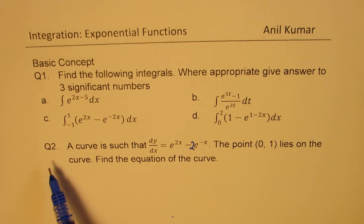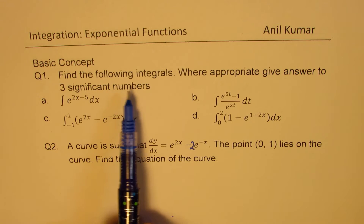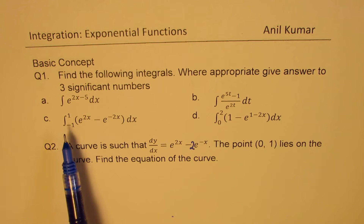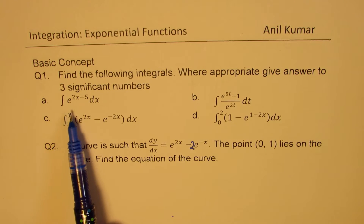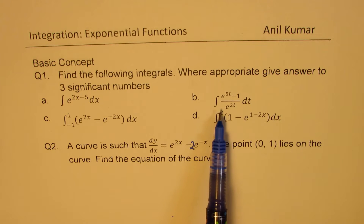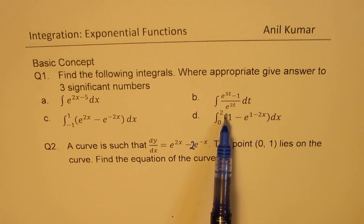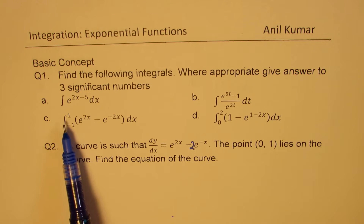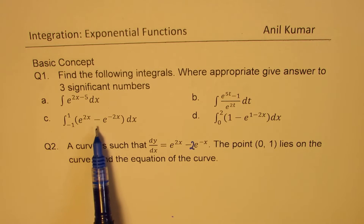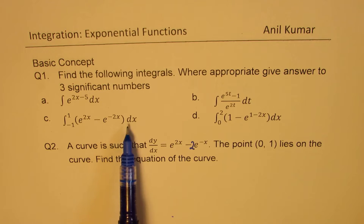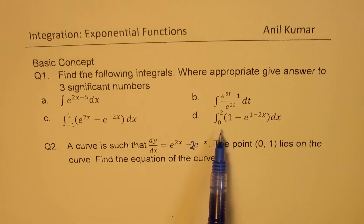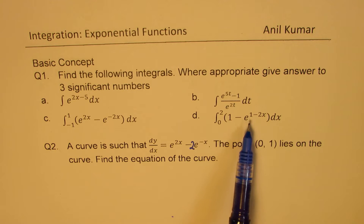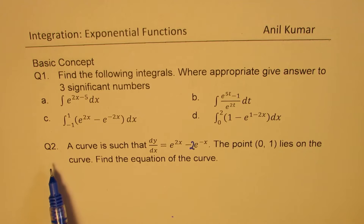Here are two questions to discuss. Find the following integrals; where appropriate, give answers to three significant numbers. Integral of e to the power of 2x minus 5 dx; integral of e to the power of 5t minus 1 over e to the power of 2t dt; and definite integral from minus 1 to 1 of e to the power of 2x minus e to the power of minus 2x dx; and integral from 0 to 2 of 1 minus e to the power of minus 2x dx.